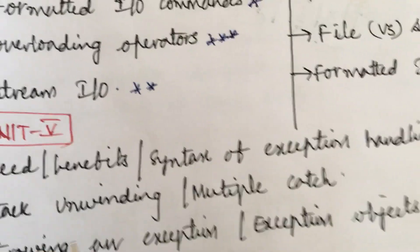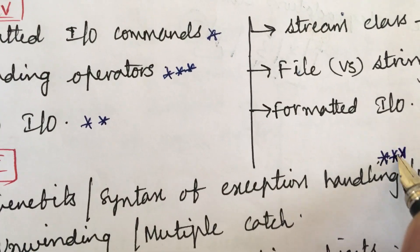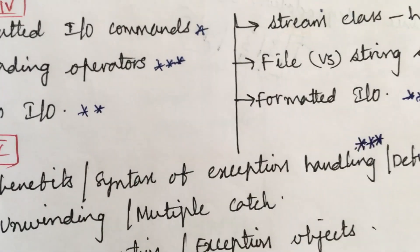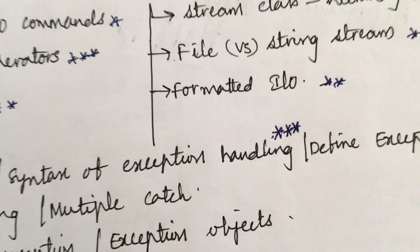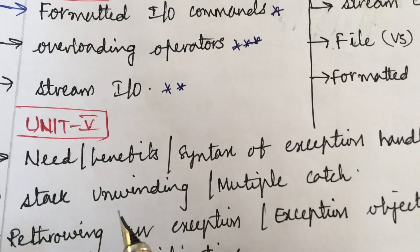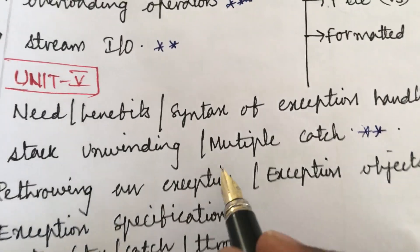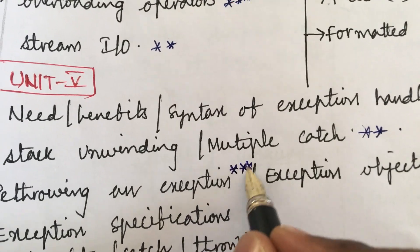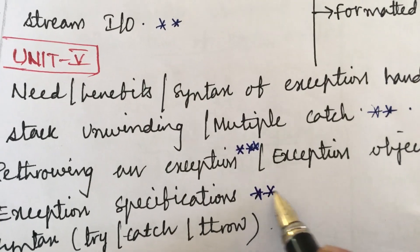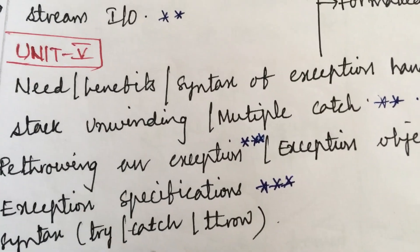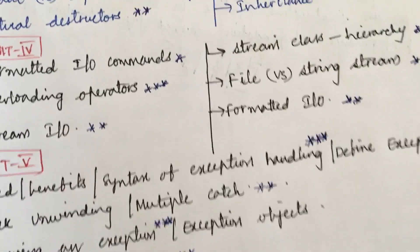Unit 5 questions are the needs, benefits and syntax of exception handling, which is the topmost question. If you are working out the long, you could be able to work out the short questions. Define exception handling, define stack unwinding, multiple catch is the topmost question. Re-throwing of an exception, exception objects and exception specifications, and syntax such as try, catch and throw.